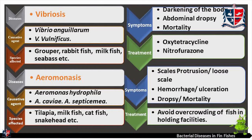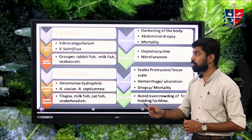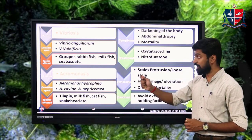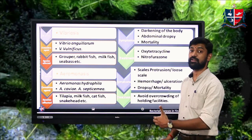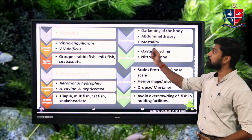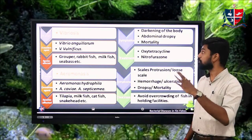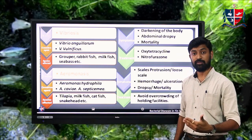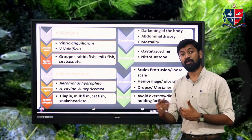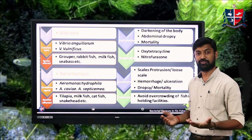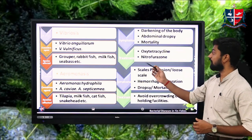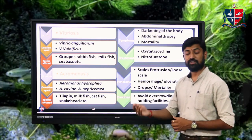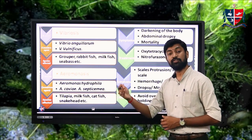Treatment for advaciliosis involves administering oxytetracycline (antibiotic) and improving water quality. Another common bacterial disease is vibriosis, caused by Vibrio anguillarum and Vibrio vulnificus, mainly affecting marine and estuarine fishes such as grouper, rabbit fish, milkfish, and sea bass. Symptoms include darkening of the body due to necrosis, abdominal dropsy, and mortality. Treatment involves oxytetracycline, nitrofurans, and antiseptic agents.